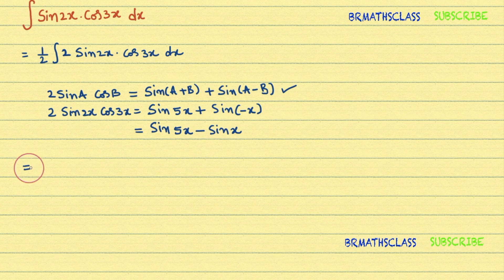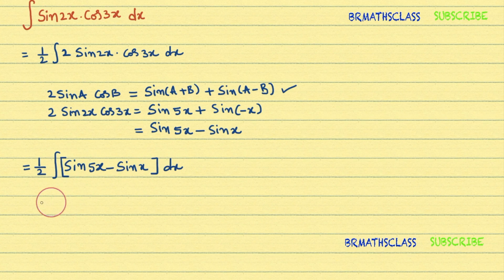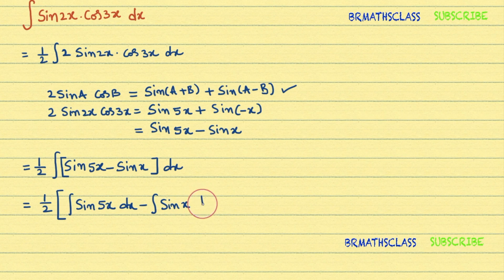Now, from the question we have one-half times the integral. We can write 2 sin 2x times cos 3x as sin 5x minus sin x dx. We integrate each and every term, giving us one-half times the quantity: integral of sin 5x dx minus integral of sin x dx.